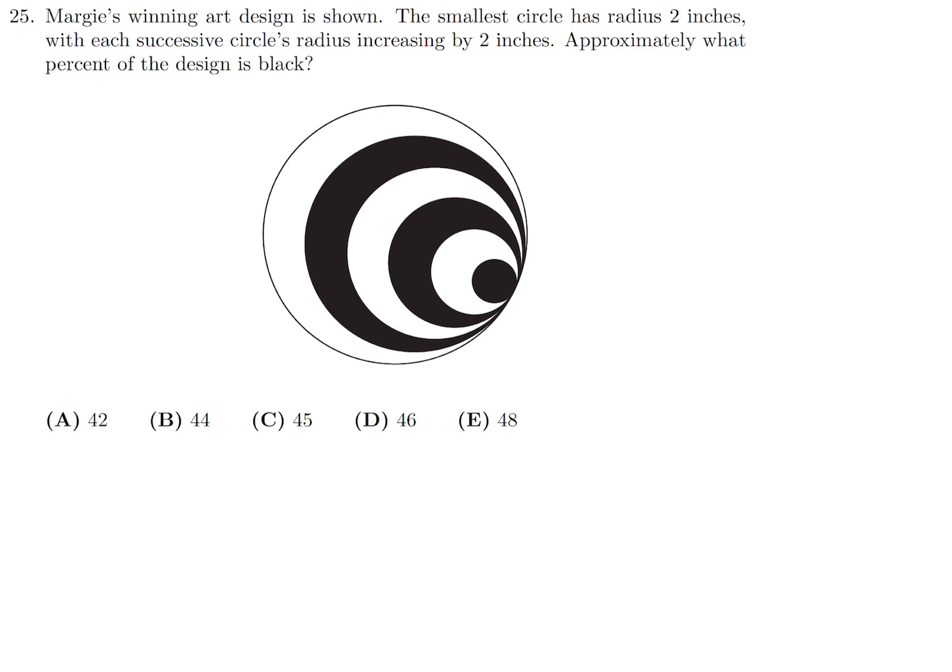Margie's winning art design is shown. The smallest circle has radius 2 inches, with each successive circle's radius increasing by 2 inches. Approximately what percent of the design is black? So we want black over total. So the first thing I'll do is the total. This radii is 2, this is 4, 6, 8, 10, 12. These are the radii. And they tell me that in the question. It starts with 2, and then it goes up by 2 for each successive circle.